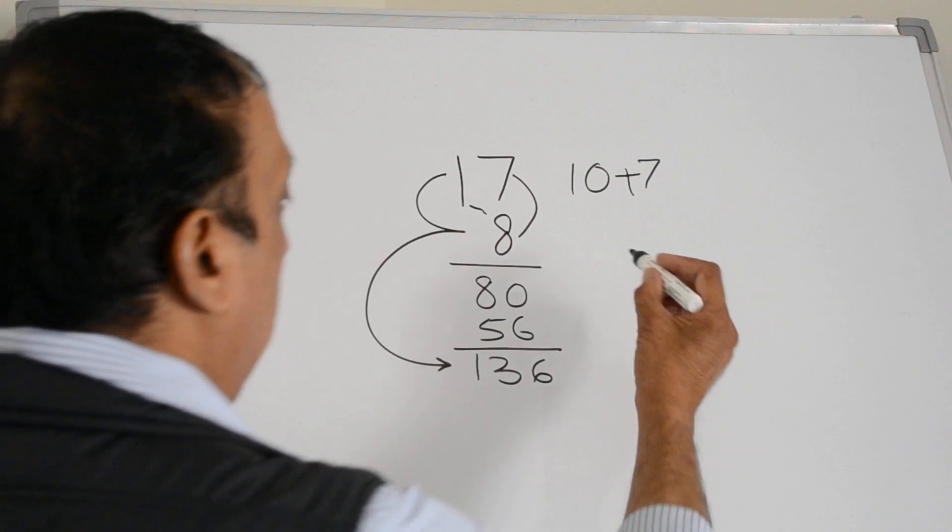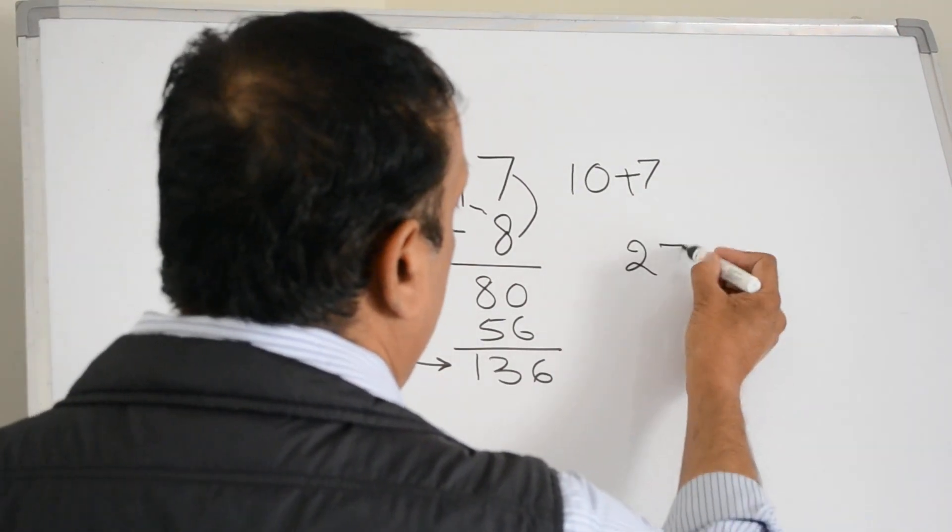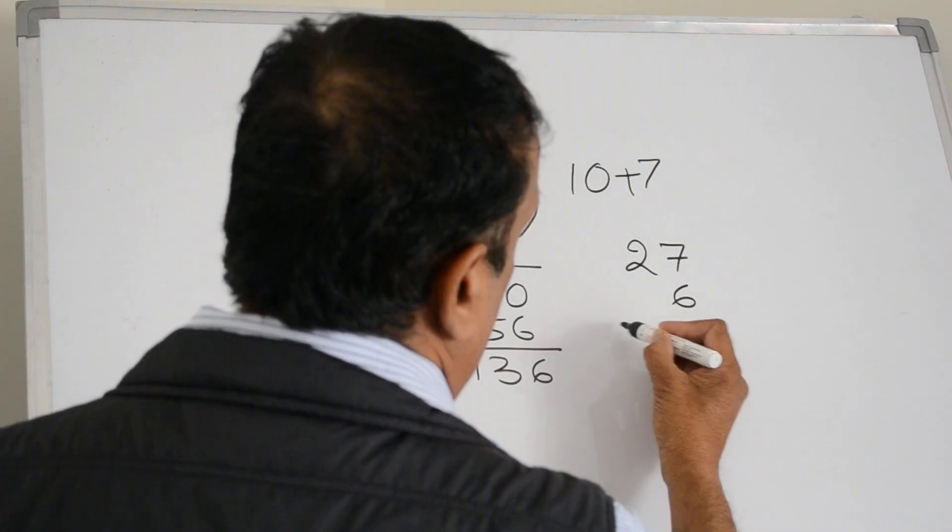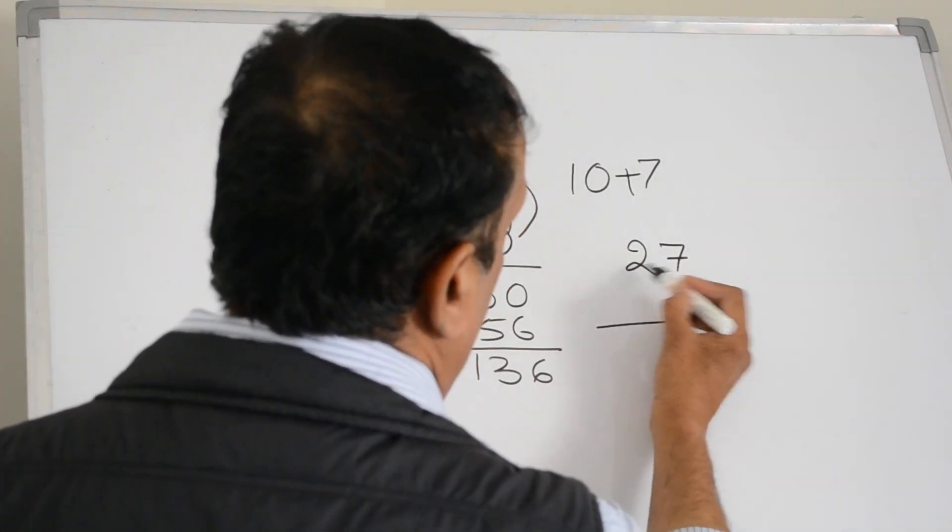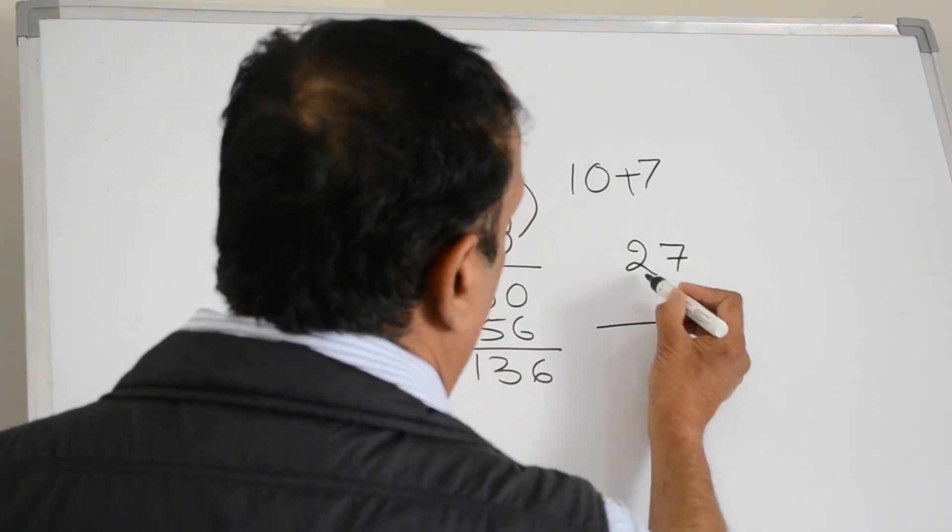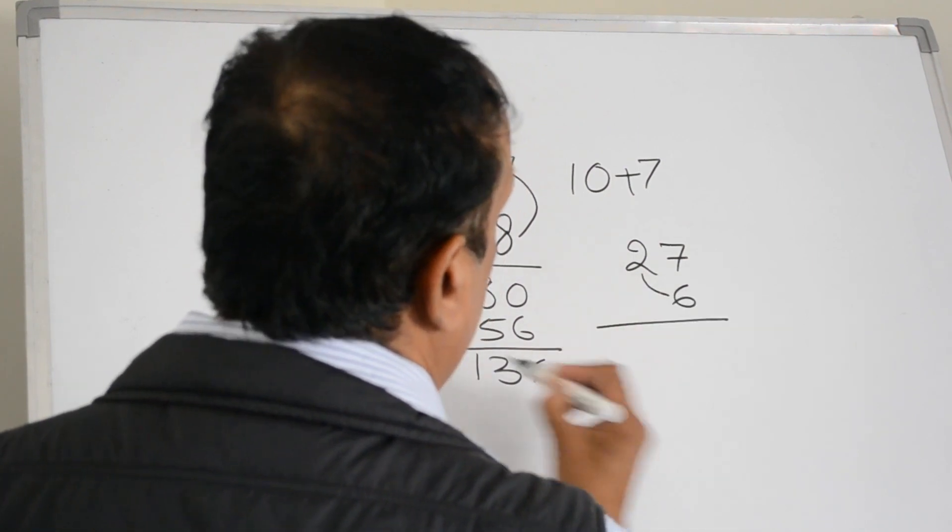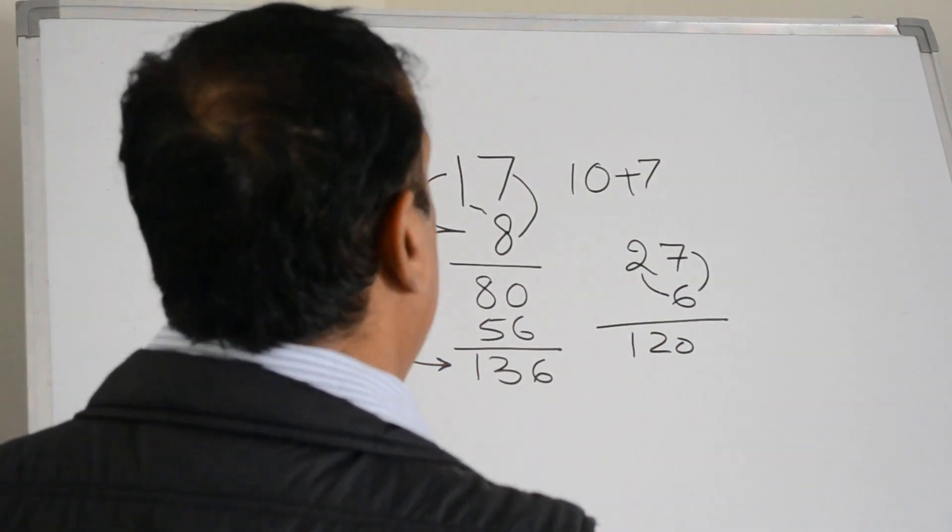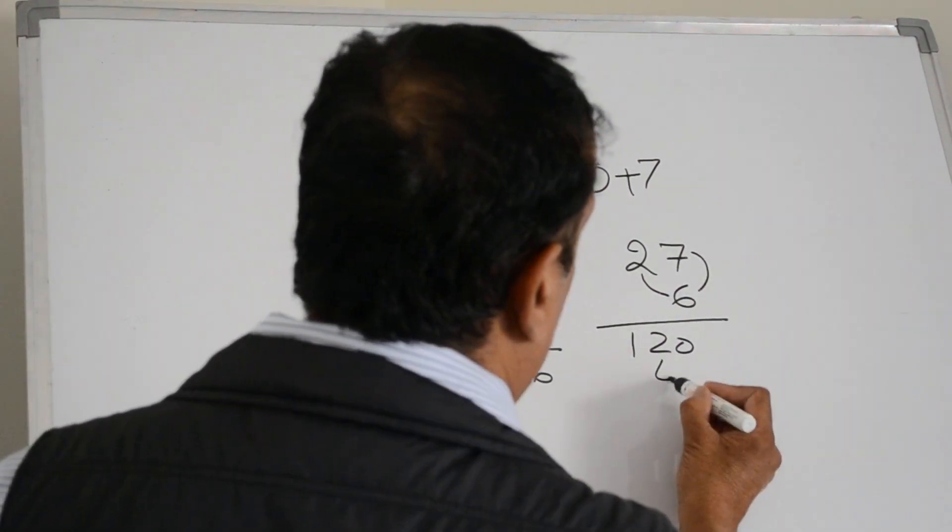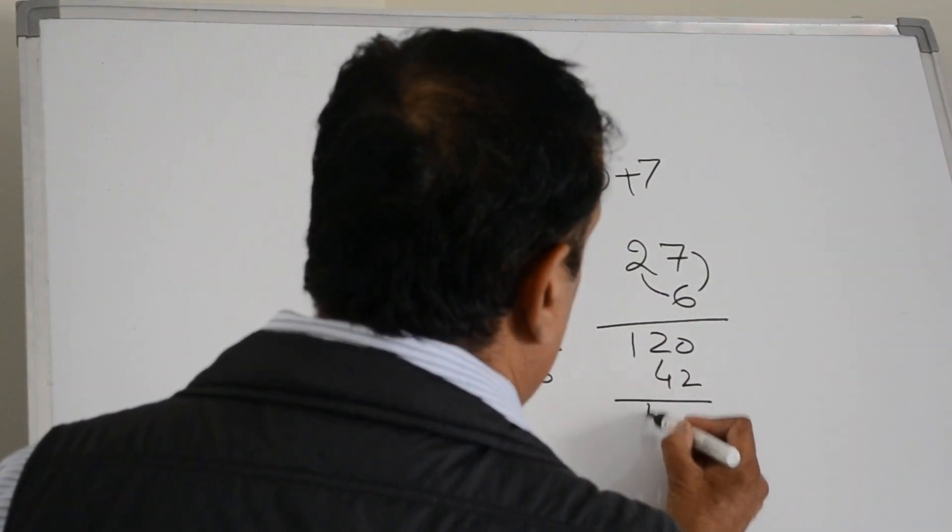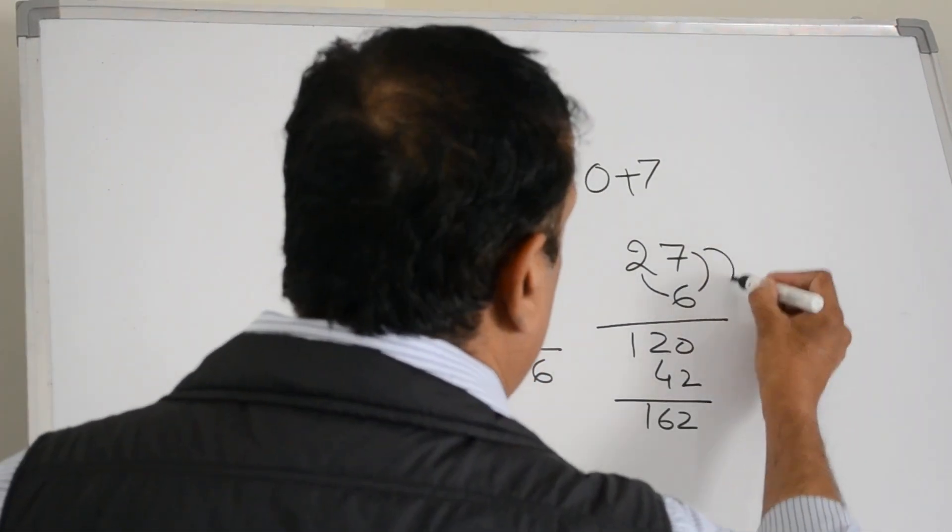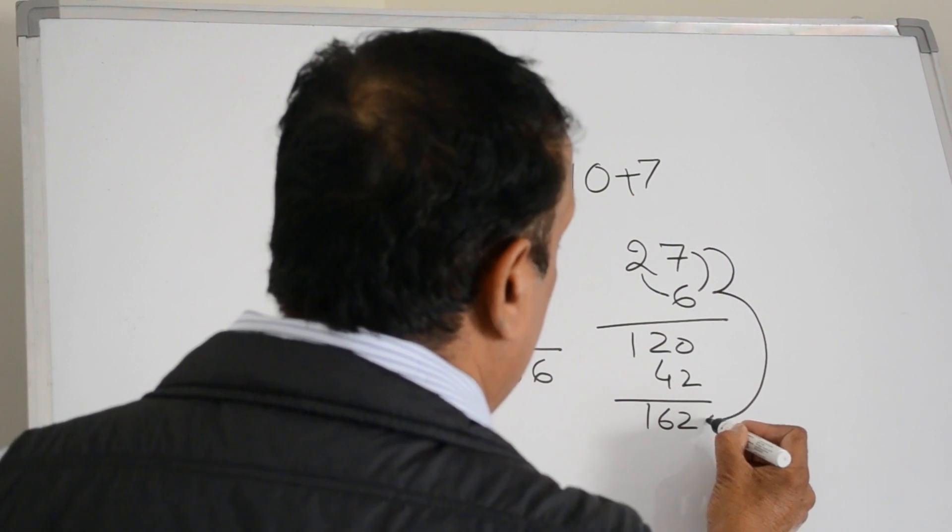Now suppose we want to know how much 27 sixes are. So again here it is 20, it is 7. Multiply 20 by 6 getting 120, multiply 7 by 6 getting 42. So 162 is the answer. It means 27 sixes are 162.